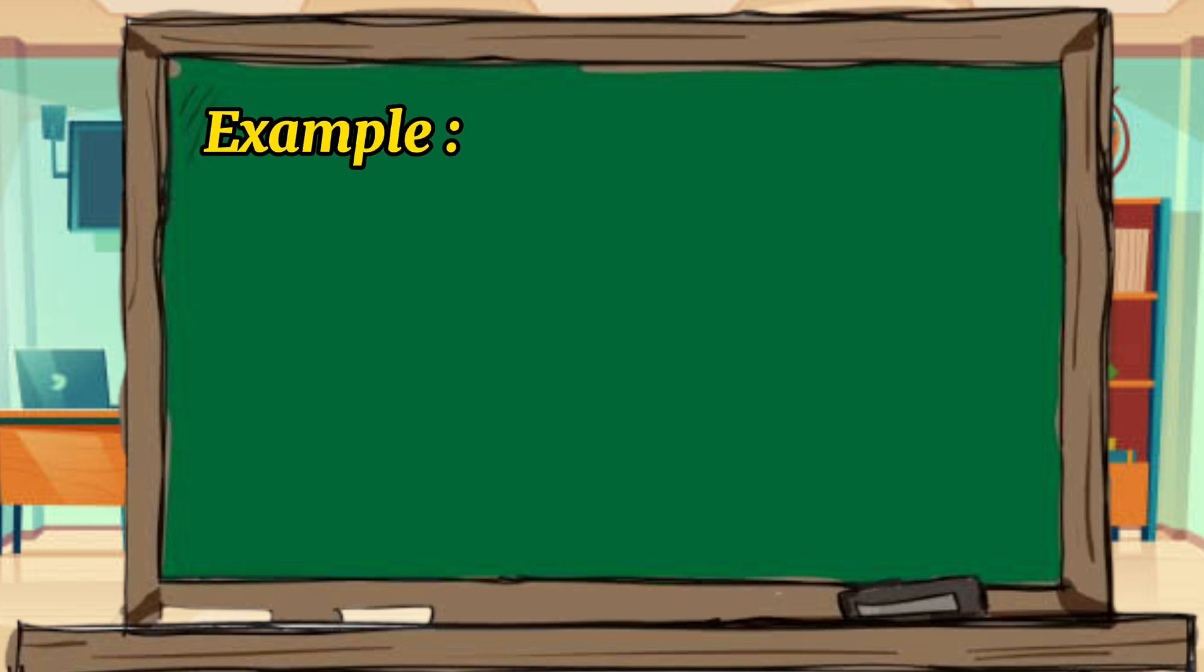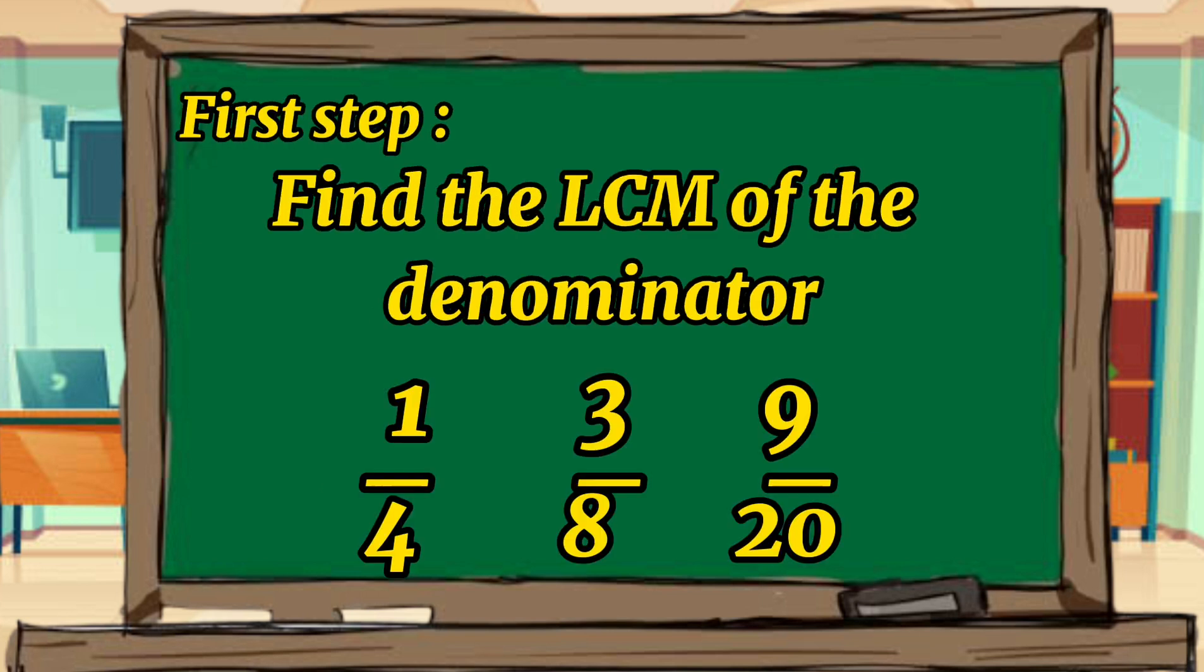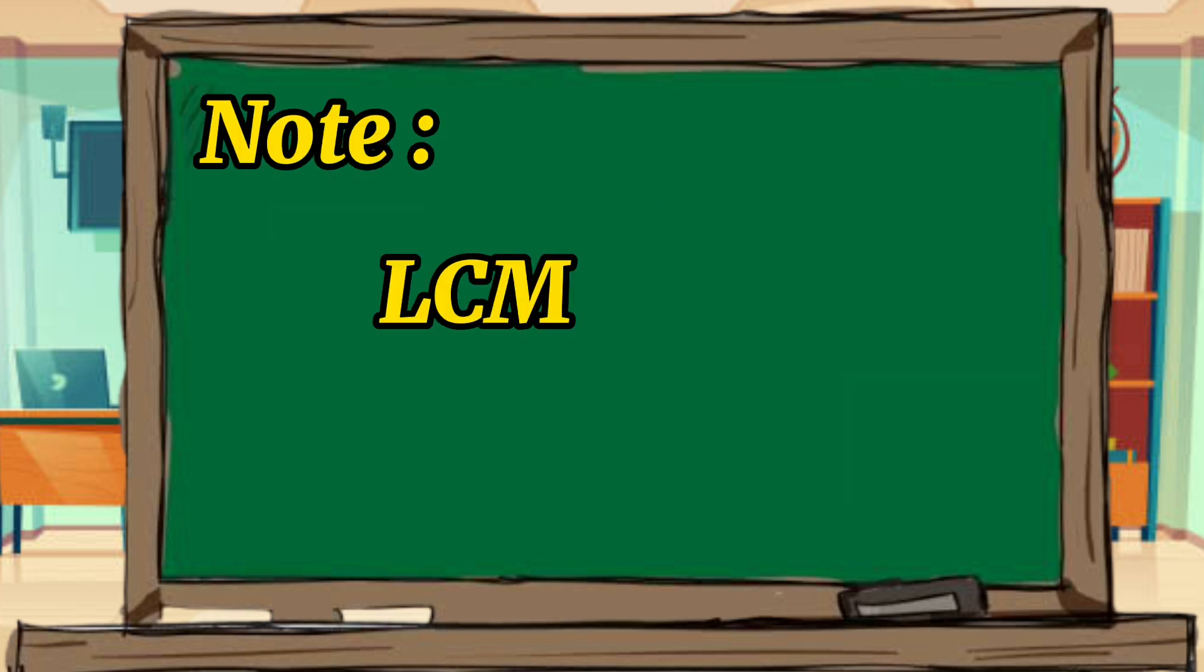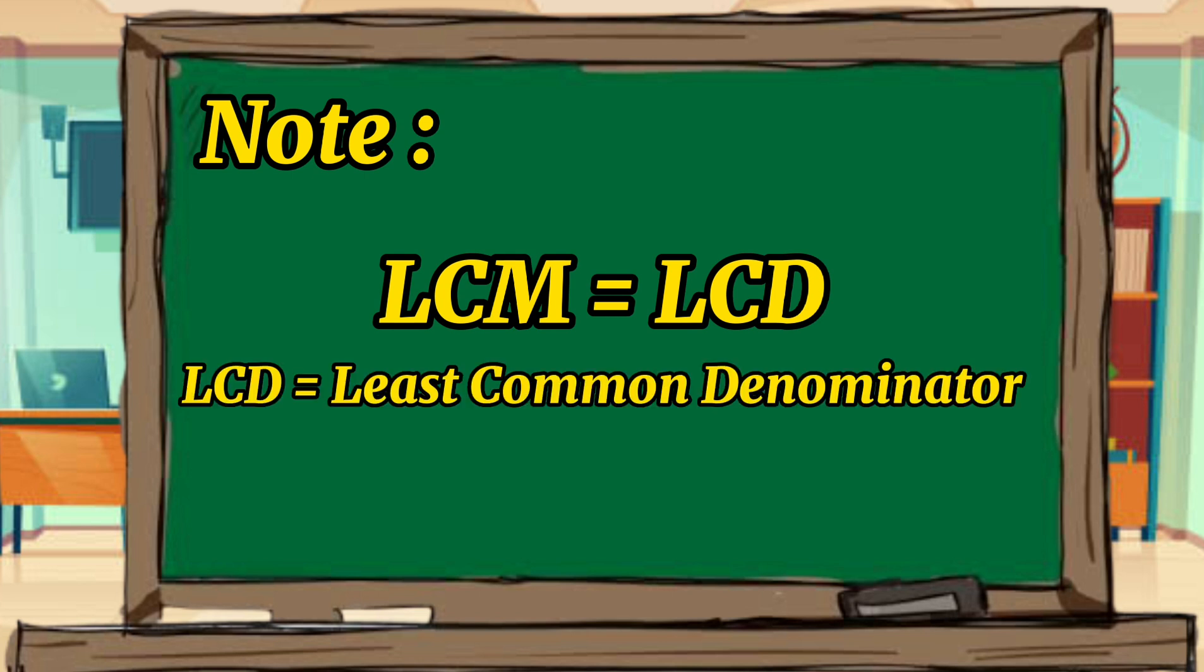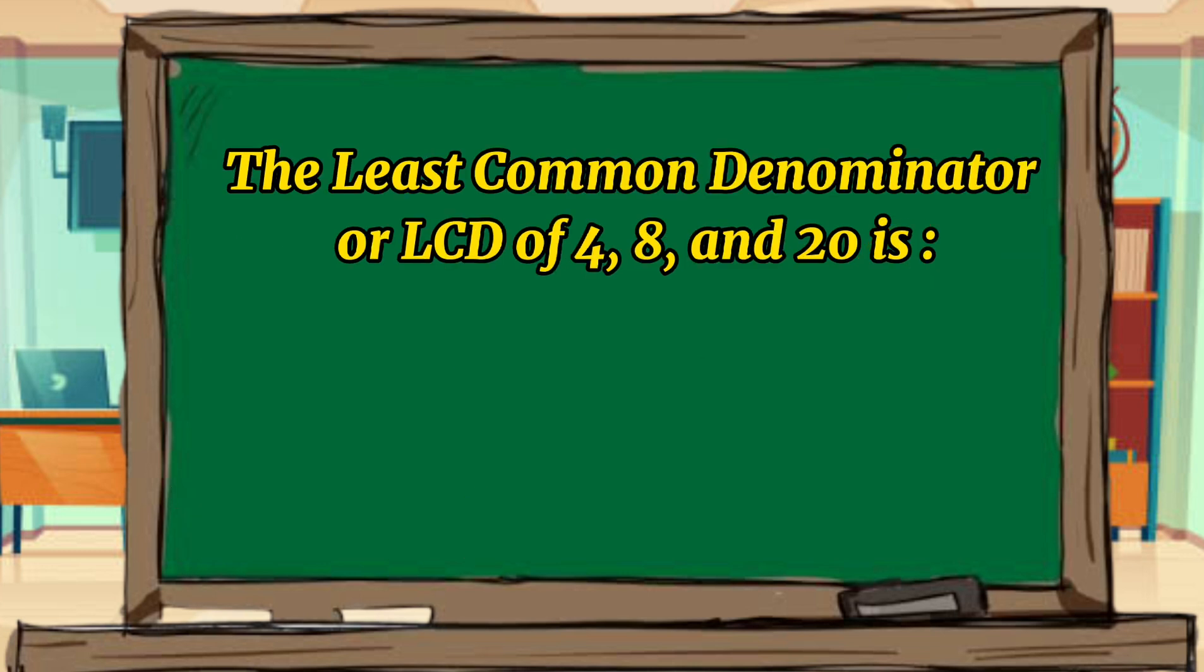Here's the example. Let's find the sum of 1/4, 3/8, and 9 over 20. The first step, let's find the LCM, or the least common multiple of the denominator of 4, 8, and 20. Let's note this, or remember, LCM is equal to LCD, or the least common denominator. Let's take a look at the LCM of 4, 8, and 20. Their LCM, or the least common denominator, is 40.